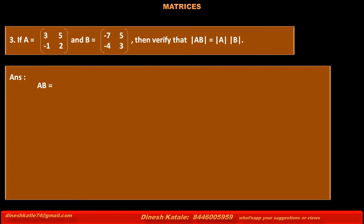Answer: The product of matrices AB is equal to matrix A [3, 5; -1, 2] into matrix B [-7, 5; -4, 3].